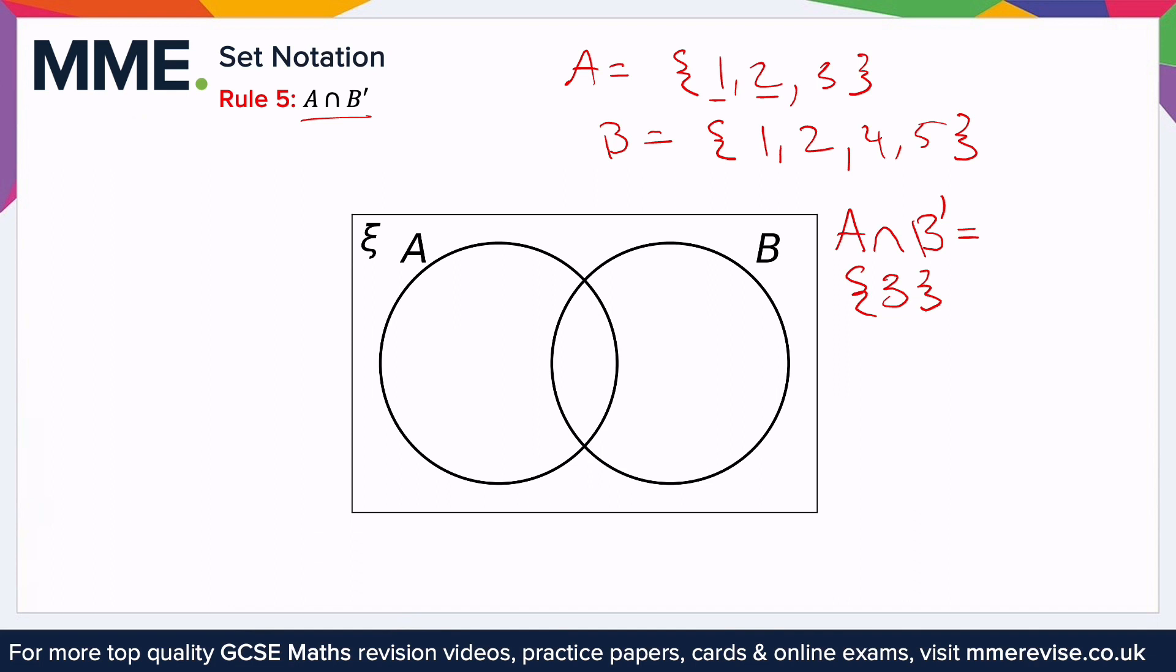How do we represent this on the Venn diagram? Well, it's just this section here, not including the bit where it overlaps with B.